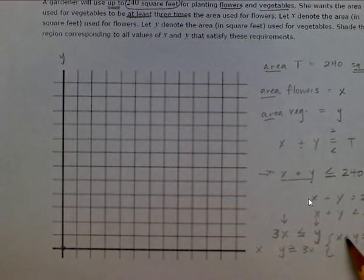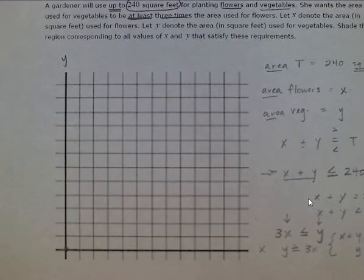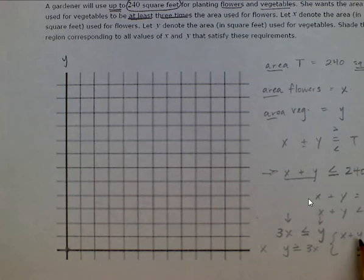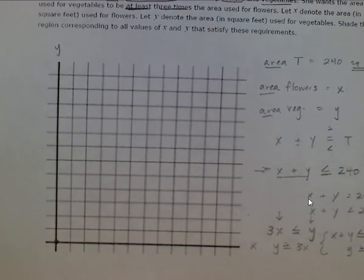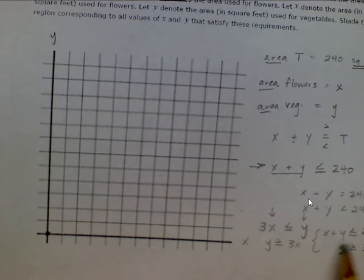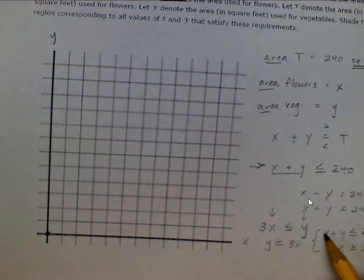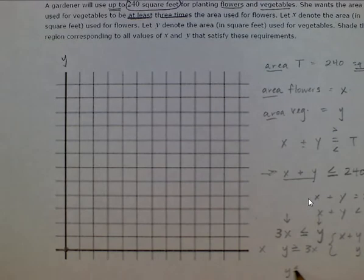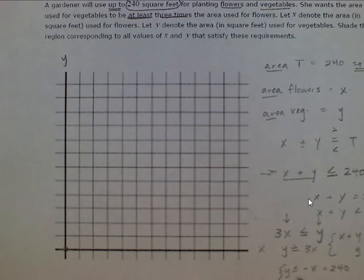The first step is to put both inequalities into y = mx + b form. The first one, x plus y ≤ 240, is not quite there. We subtract x from both sides using opposite operations, giving us y is less than or equal to negative x plus 240. The second inequality, y ≥ 3x, is already in slope-intercept form and stays the same.